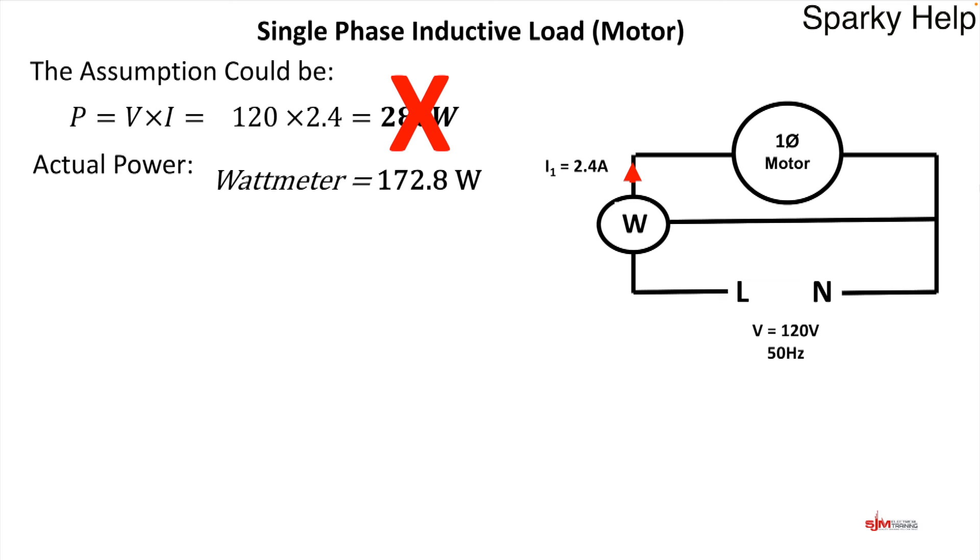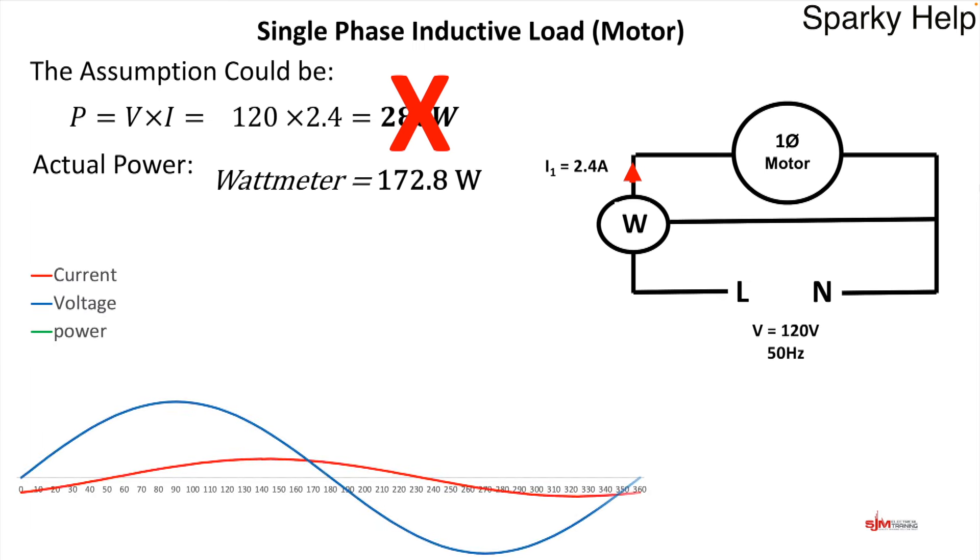What you want to work out is the watts. And if we put a watt meter in, this would give us a value on this particular one of 172.8 watts. So we could see that the formula above, which doesn't work in its present form, and the watts, we've got 172. They're a little bit different. So what's going on?